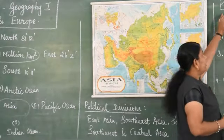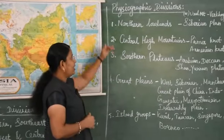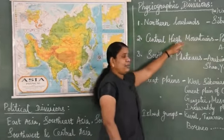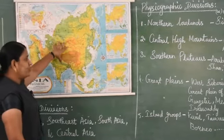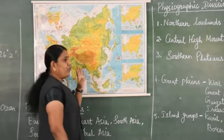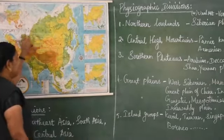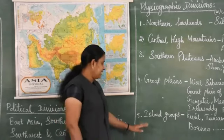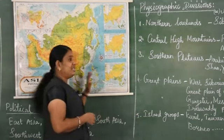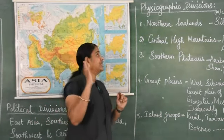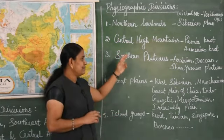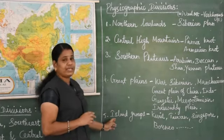What are the five major physiographic divisions? First one, Northern lowlands. Second, Central high mountains. Third, Southern plateaus. Fourth, Great Plains. And the last one is Island groups. One more time: the five major physiographic divisions are Northern lowlands, Central high mountains, Southern plateaus, Great Plains, and Island groups.